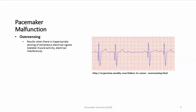You can also have over sensing. This results when there is inappropriate sensing of extraneous electrical signals, such as skeletal muscle activity or electrical interference. These signals are interpreted by the pacemaker as intrinsic activity, and as a result the pacemaker does not fire. So it fired appropriately at first, but then picked up interference and mistook it for intrinsic electrical activity, causing it to withhold pacing — that is over sensing.